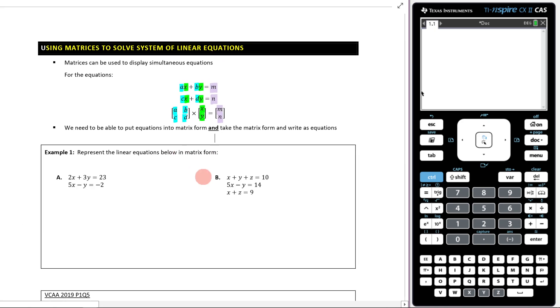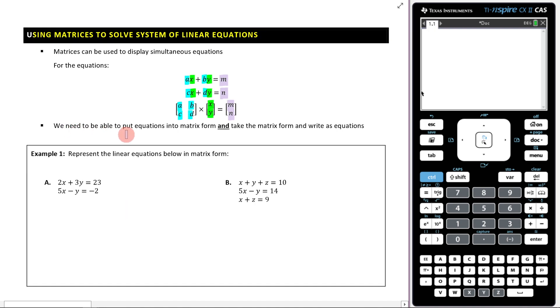So let's read this final sentence here. It says, we need to be able to put equations into matrix form and take the matrix form and write as equations. So in other words, you need to be able to go back and forth from here to here, or from there to here. You need to be able to go back and forth between these and understand how it works.